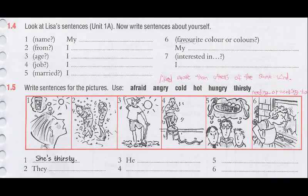Exercise 1.4: Look at Lisa's sentences in Unit 1A, then write sentences about yourself. 1. My name is Sergio. 2. I am from Brazil. 3. I am 49 years old. 4. I am an English teacher. 5. I'm not married. 6. My favorite color is brown. 7. I am interested in English.